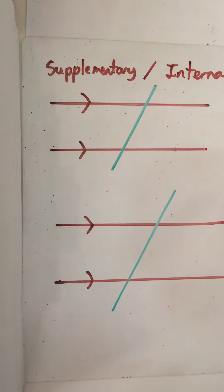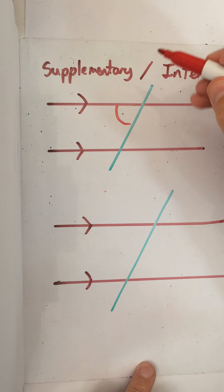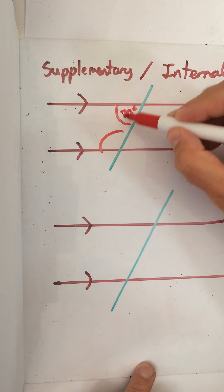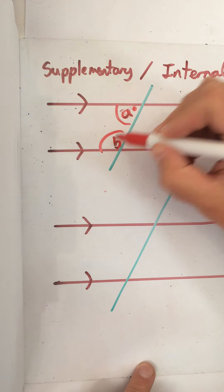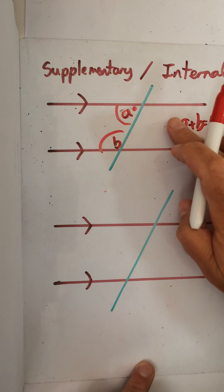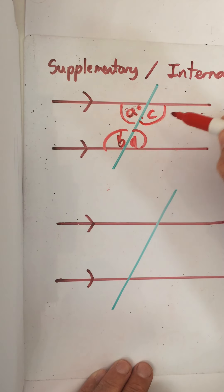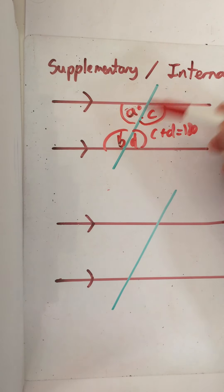And one more before we look at a couple of questions. On your notes, these are known as supplementary angles, also sometimes called co-interior or internal angles. They're along the parallel lines. So if angle A is here and angle B is here, angle A plus angle B will always equal 180 degrees. And the same on the other side — C plus D equals 180. So it's the internal angles when you've got the parallel lines and the transversal.